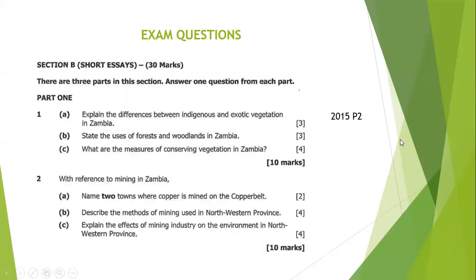Now let us look at some examination questions. From the 2015 Paper 2 Geography exam, question two asks: name two towns where copper is mined on the Copperbelt. The answers include Chingola, Kitwe, Mufulira, and so on — you can pick any of those.